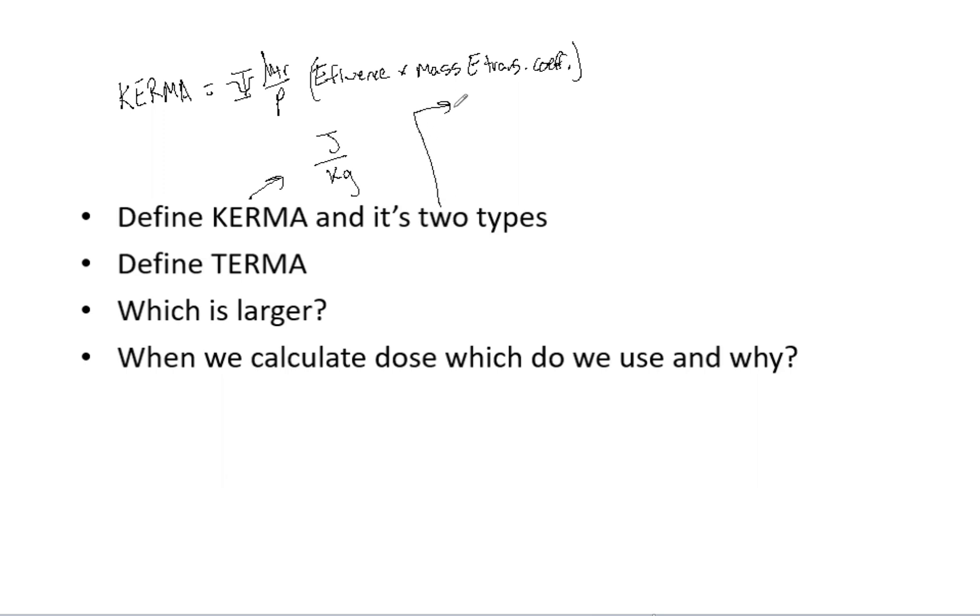Now it's got two types. First thing we have collisional Kerma. So that is the amount of energy released in collision interactions. I'm going to write that right here. And so that, for example, is Compton effect. Another example would be photoelectric. And so that is what is considered collisional Kerma.